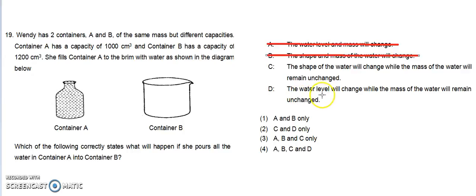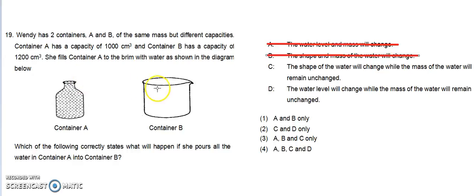Option D: the water level will change while the mass of water will remain unchanged. Although container A is filled to the brim, container B has a bigger capacity, so when A is poured into B, it will not fill container B to the brim.